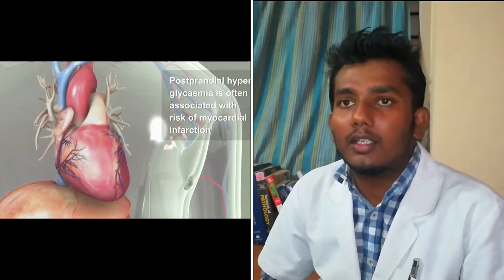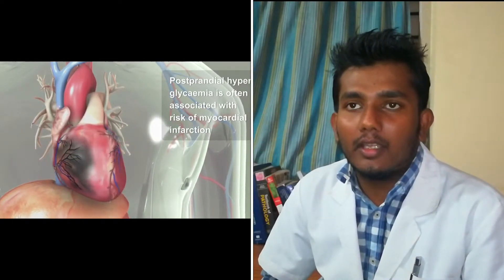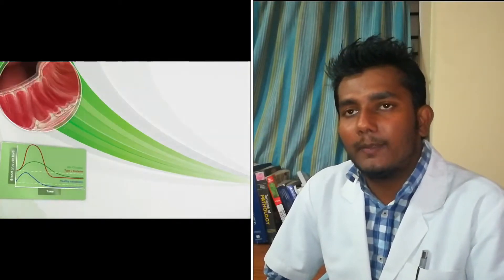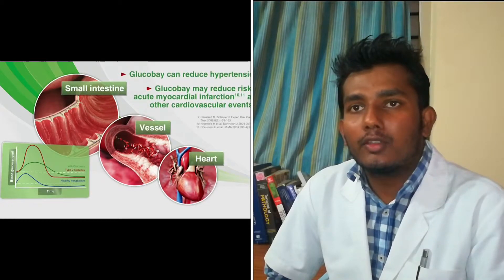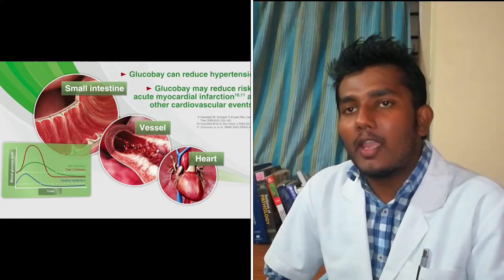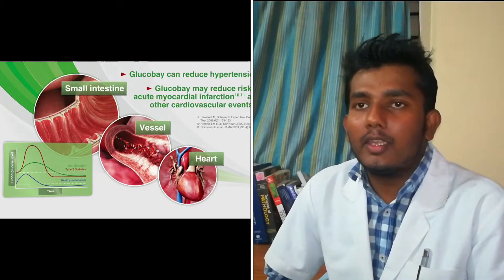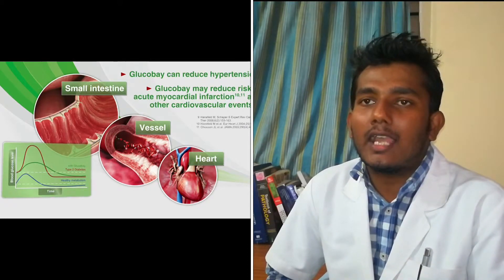Diabetes mellitus is also associated with high blood pressure, or hypertension. Atherosclerosis and hypertension are the major consequences for cardiovascular disease. It also develops coronary artery disease and myocardial infarction. By reducing hypertension and other detrimental vascular effects, Acarbose also reduces acute myocardial infarction events. In this way, it helps to prevent cardiovascular events in type 2 diabetes mellitus.